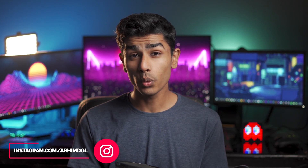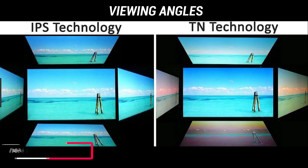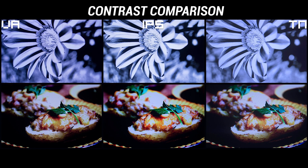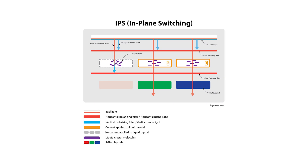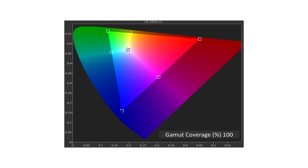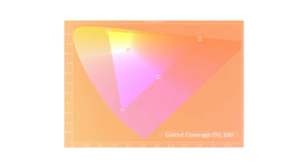Starting with IPS, it provides you with the best viewing experience — that includes the best viewing angles, best color reproduction, and contrast ratios. That's the reason if you're creating content that is color-sensitive, you should go for these panels. Professional creators prefer them because of the higher color range and factory-calibrated displays which generally cover the DCI-P3 color gamut.